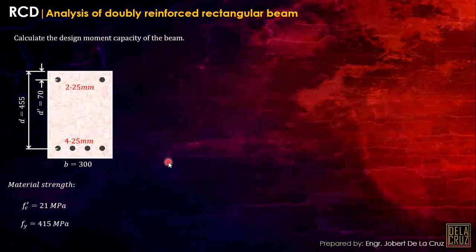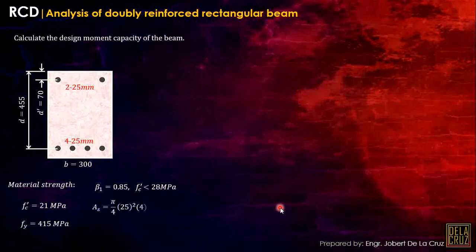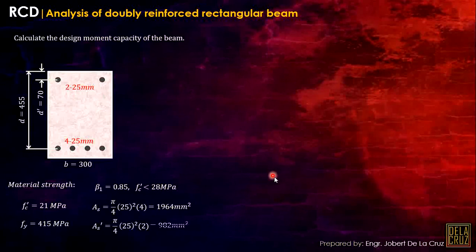So that should be clear — that is D'. Now let's calculate beta1 first. That should be 0.85 since fc' did not exceed 28 MPa. We have our As: pi/4 times diameter squared times 4 bars. And we have As' representing the compression bars — that is 982 mm².